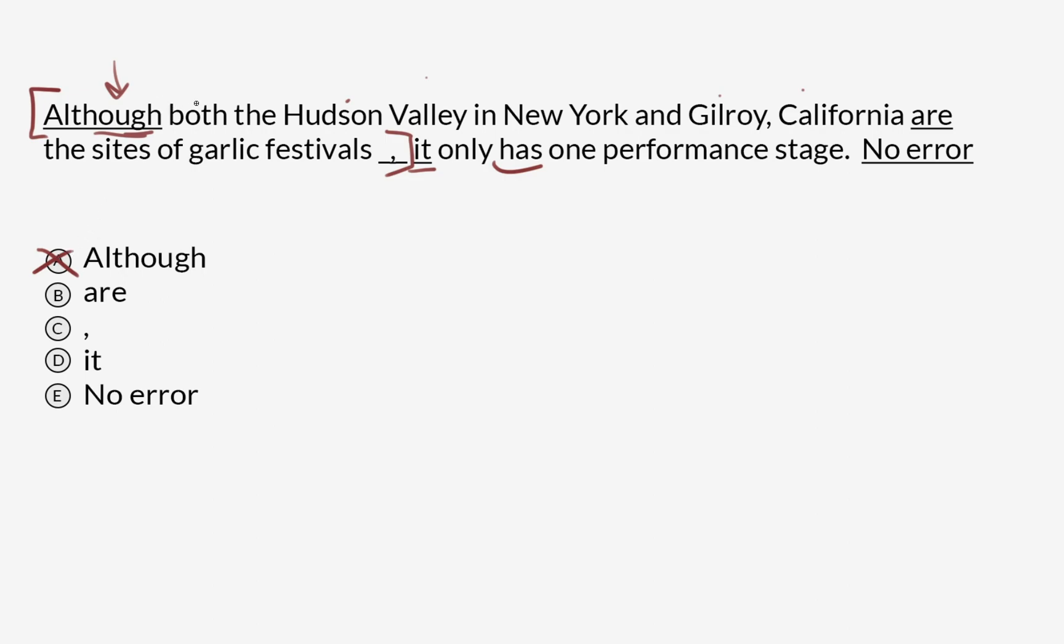Something I discovered while reading this aloud: 'both the Hudson Valley, Gilroy, California are.' This is a plural subject corresponding to a plural verb, which means that on the grounds of numerical agreement for verbs, this checks out.